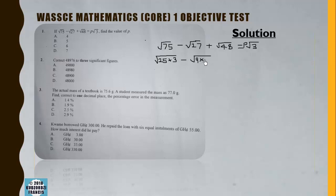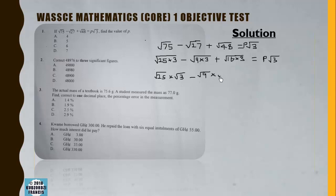√27 is the same as √(9×3), and √48 is the same as √(16×3), all equal to p√3. We split each square root: √25 × √3 - √9 × √3 + √16 × √3 = p√3.